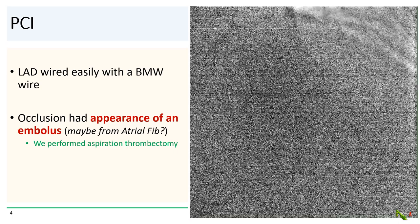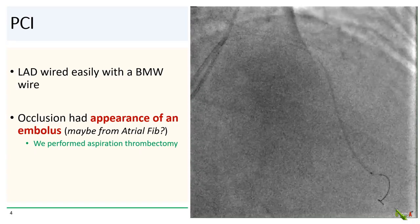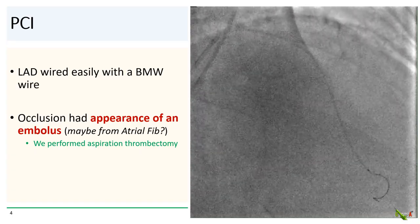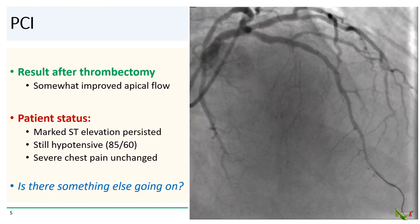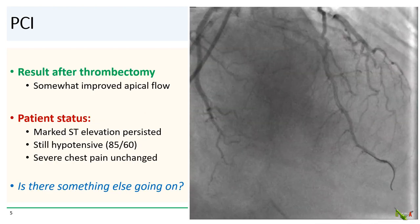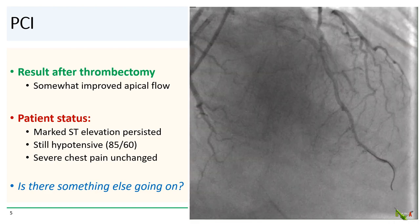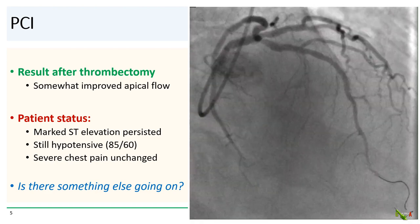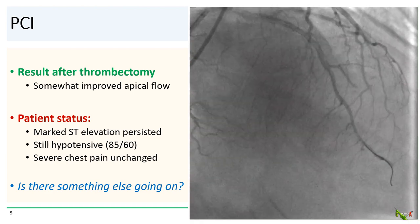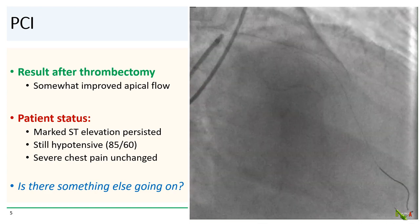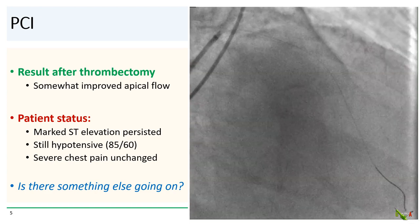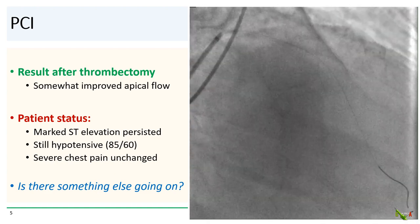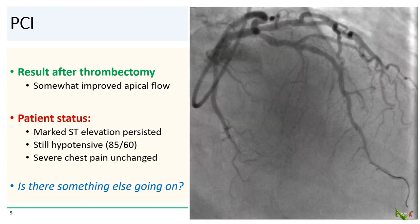So we went to work. The LAD was easily wired with a BMW. The occlusion was very distal and had the appearance of an embolus — we thought maybe from his paroxysmal afib. So we went ahead and performed aspiration thrombectomy, hoping not to have to place a stent so far distally. After aspiration thrombectomy, there was somewhat improved apical flow, but the patient still was not doing well.